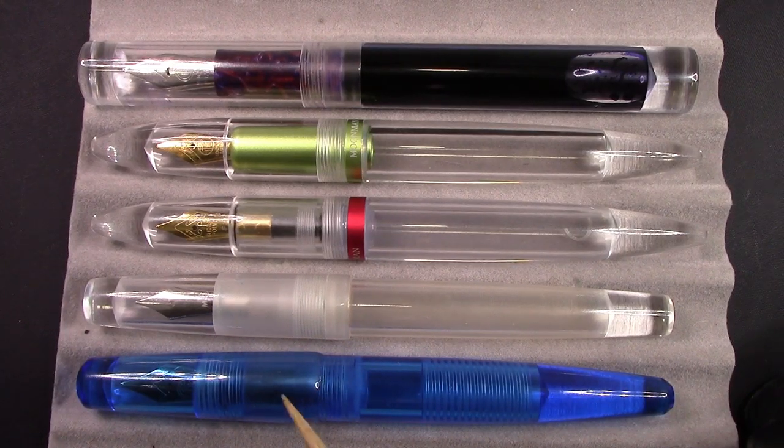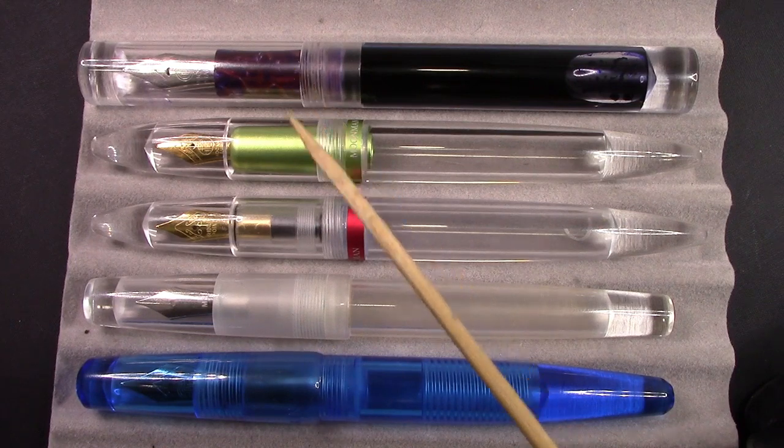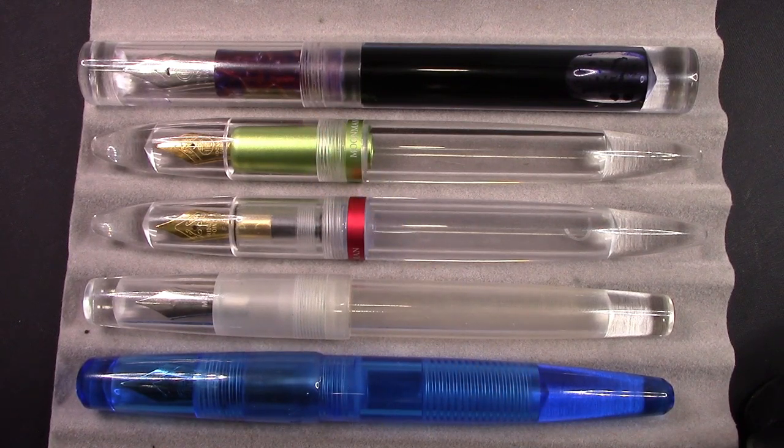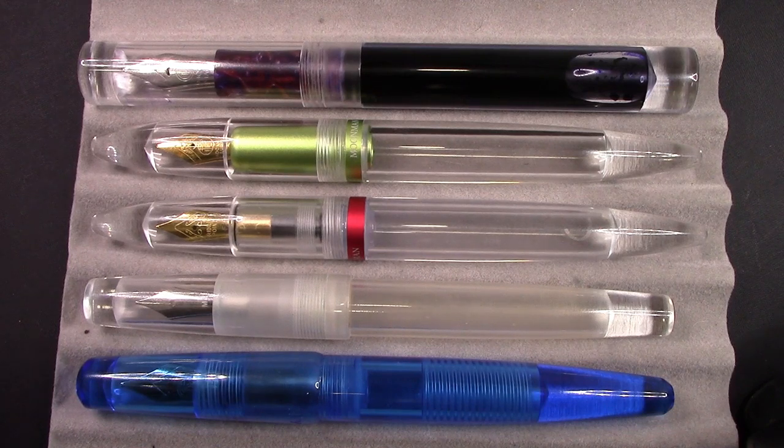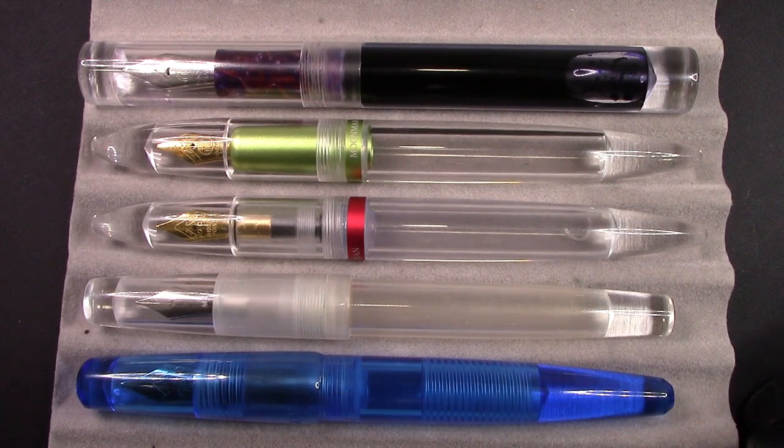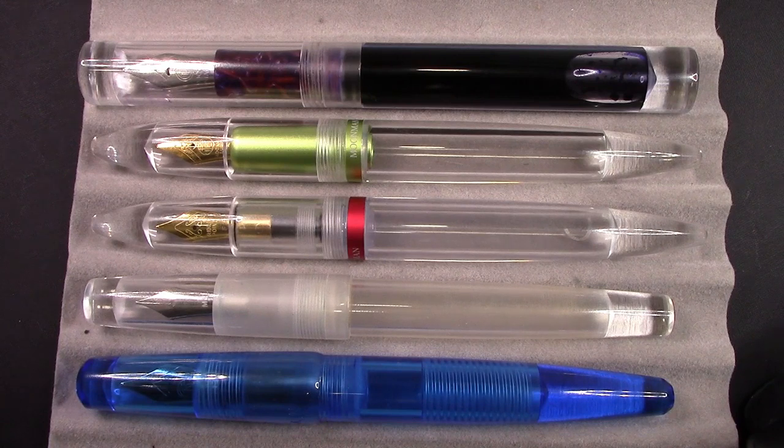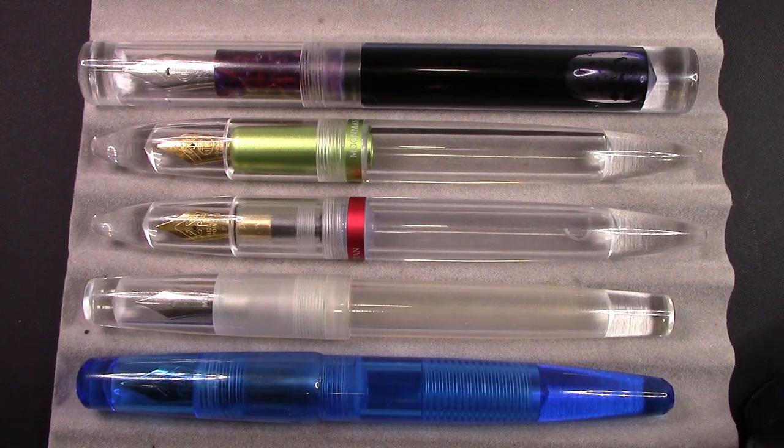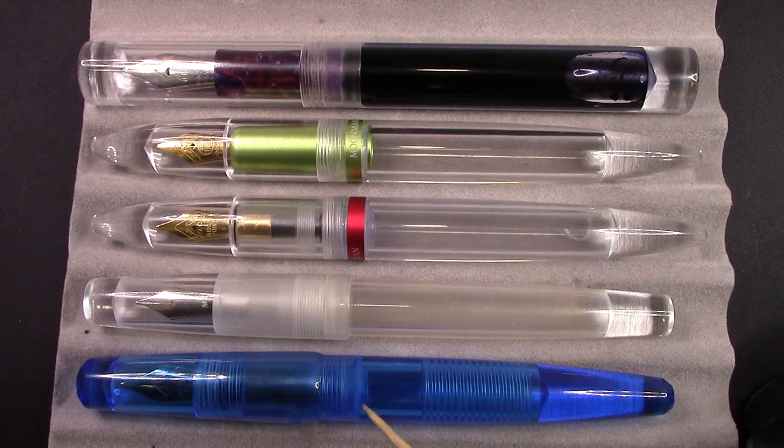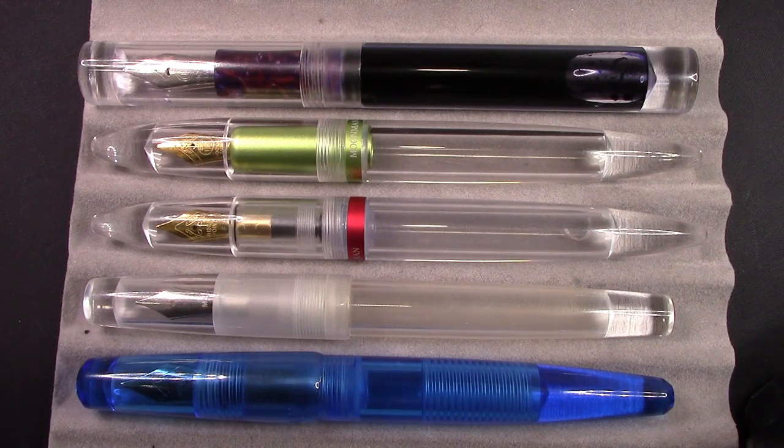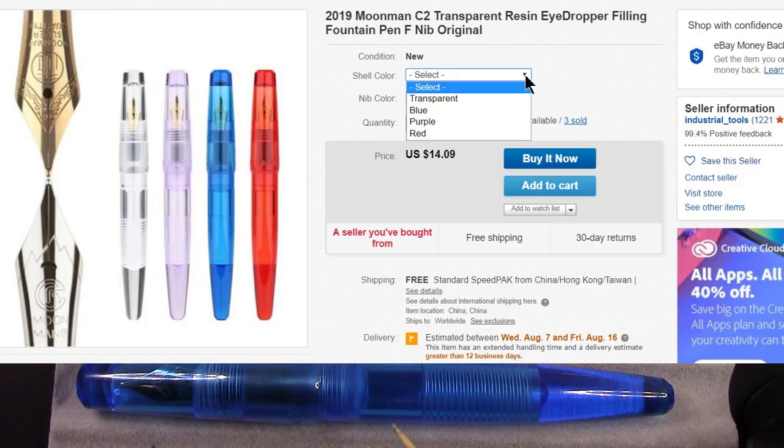The C2, unlike these other pens, also comes in a number of different colors. I think MoonMan wanted to do a couple different things with this model. Number one, a lower price point but still maintain the option of that number six nib. For some reason, give people an option of a number five nib, and also to give an option of colors. Here's a nice picture from the web of the colors that the C2 is available in.